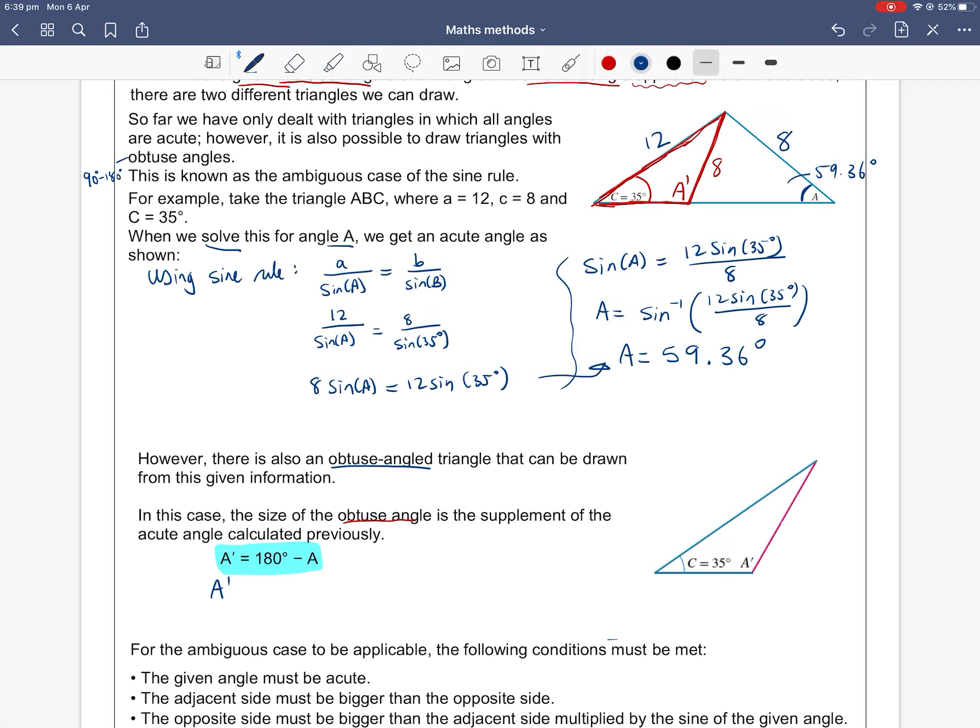So we substitute our previous answer. So A prime, this ambiguous case, the second possible angle of angle A is 180 degrees minus 59.36. That's my previous answer. So that is approximately 120.64 degrees.